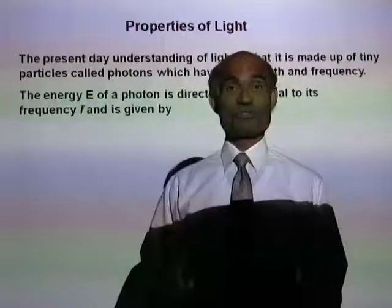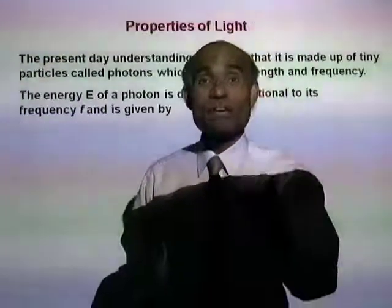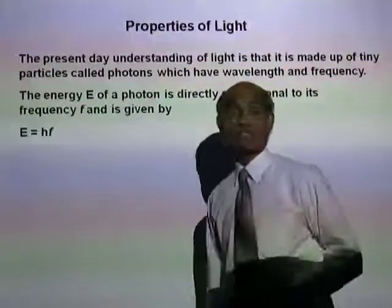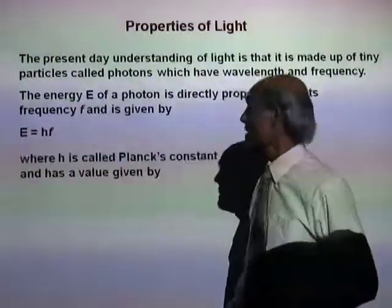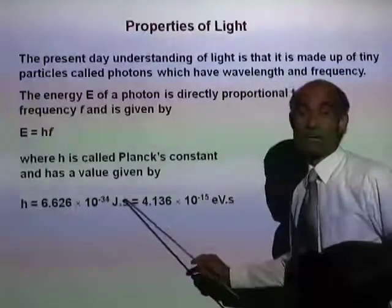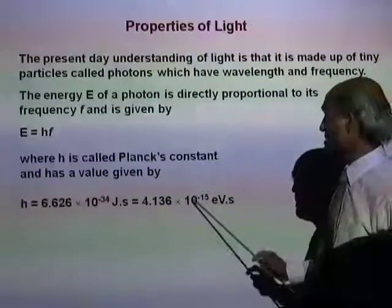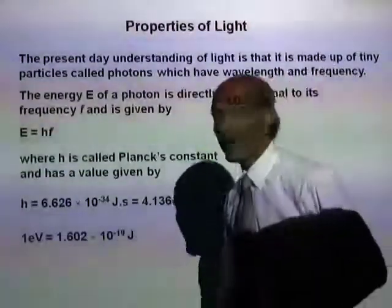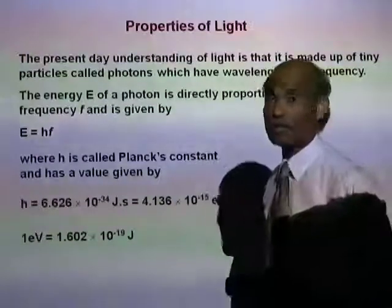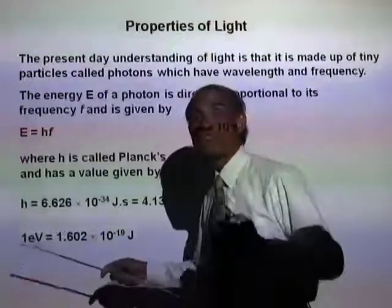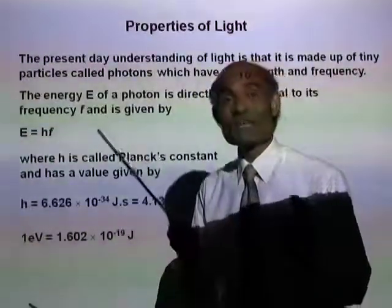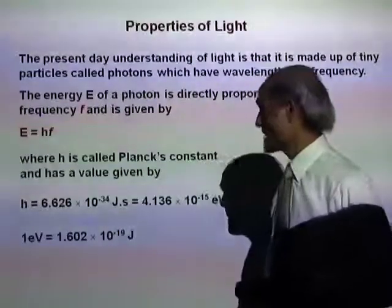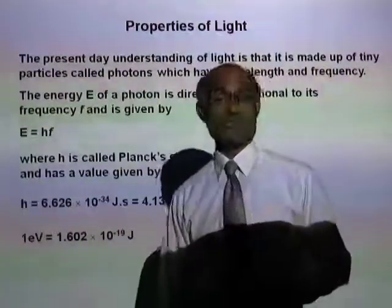The energy E of a photon is directly proportional to its frequency, and it is given by the equation E equals HF, where H is a constant called Planck's constant and F is the frequency. Planck's constant has a value of 4.136 times 10 to the negative 5 electron volt second. One electron volt is the energy acquired by an electron when it is accelerated by a potential difference of one volt, equivalent to 1.602 times 10 to the negative 19 joules — a very small amount of energy.